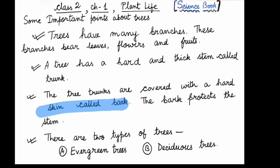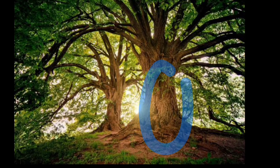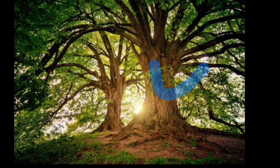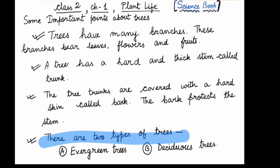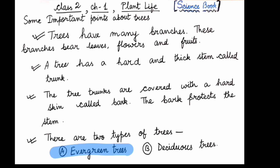The tree trunks are covered with a hard skin called bark. This brown outer covering is known as the bark of the tree. The bark protects the tree and protects the stem. There are two types of trees: evergreen trees and deciduous trees.